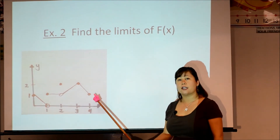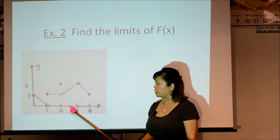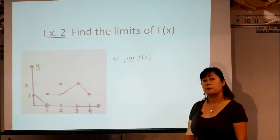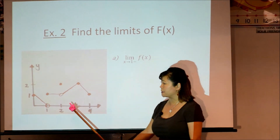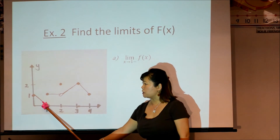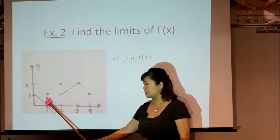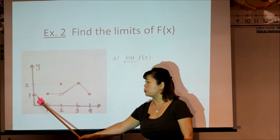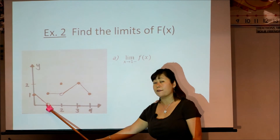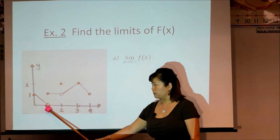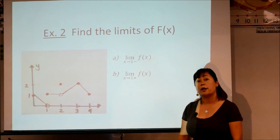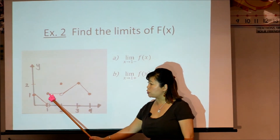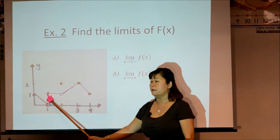Now we have a new graph — not a written function, just some graph we need to read. The first part asks for the limit as X approaches 1 from the left-hand side. The left-side function approaching 1 gives a Y value of 0. The limit as X approaches 1 from the right-hand side uses the other function, approaching 1, giving a Y value of positive 1.